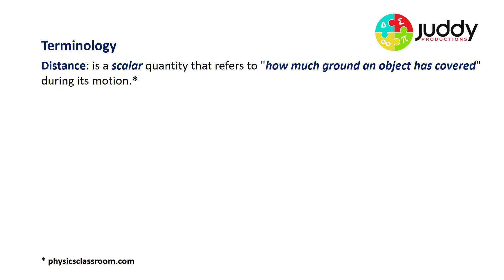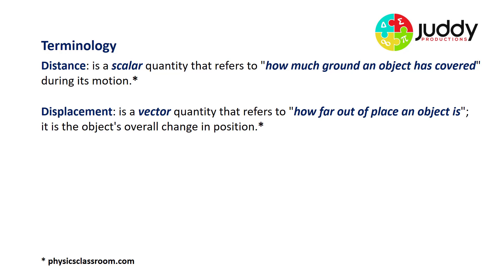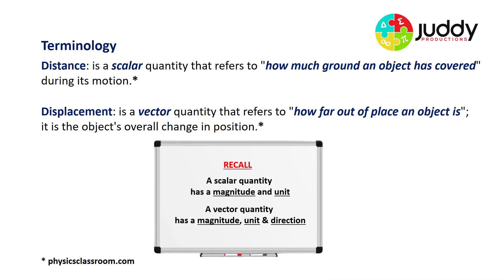Some terminology: distance is a scalar quantity that refers to how much ground an object has covered during its motion, whereas displacement is a vector quantity that refers to how far out of place an object is — it's the object's overall change in position. A scalar quantity has a magnitude and a unit, for example 10 kilograms, whereas a vector quantity has a magnitude, a unit, and direction, such as an acceleration of 5 metres per second squared to the east.